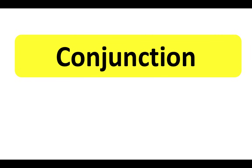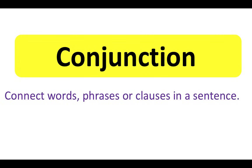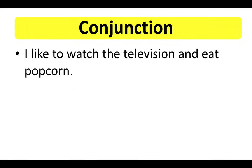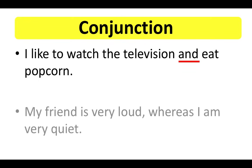A conjunction is used to connect words, phrases, or clauses in a sentence. For example: and, but, although, or. 'I like to watch the television and eat popcorn' — the conjunction in this sentence is 'and.' 'My friend is very loud, whereas I am very quiet' — the conjunction in this sentence is 'whereas.'